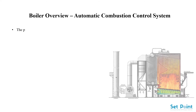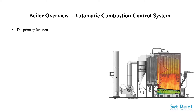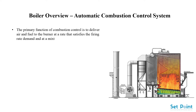In this tutorial, I would like to talk about the automatic combustion control system used in the industrial boiler. The primary function of combustion control is to deliver air and fuel to the burner at a rate that satisfies the firing rate demand and at a mixture air-fuel ratio that provides safe and efficient combustion.